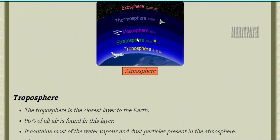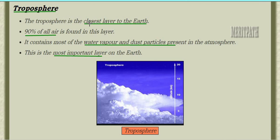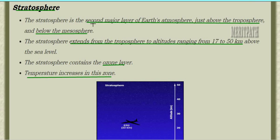Troposphere is the closest layer to the earth and ninety percent of the earth's air is found in this layer. This layer is made up of water vapor and dust particles and is also the most important layer of the earth. This is the image of the troposphere.